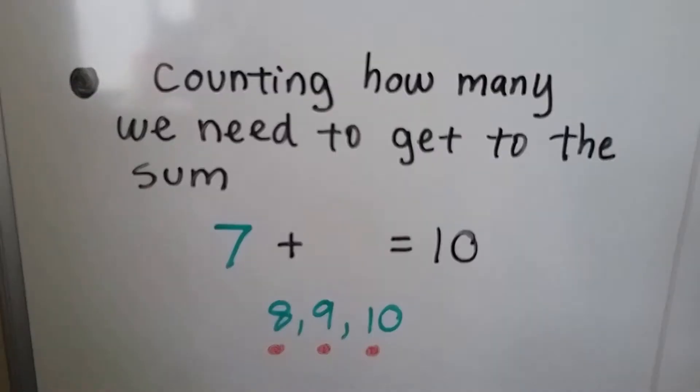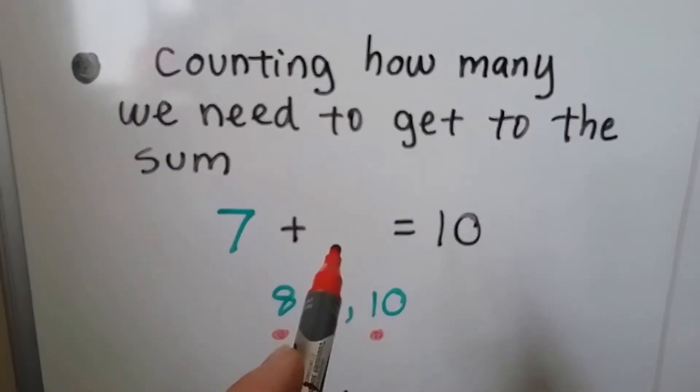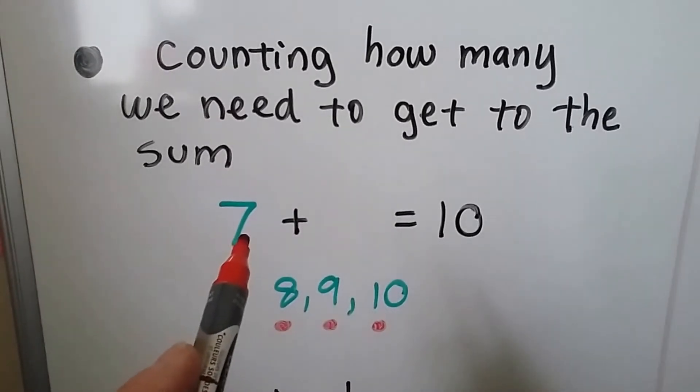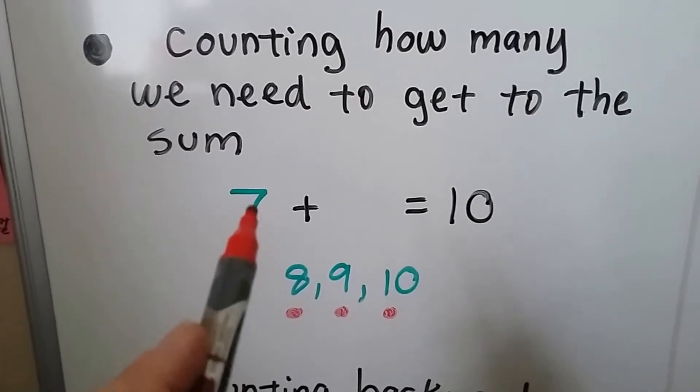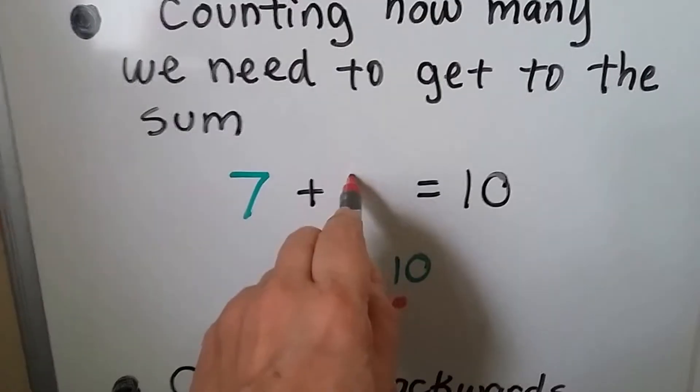And we can try counting how many we need to get to the sum. If we have 7 plus some number equals 10, we start at 7 and go up to the 10. So we start at 7, 8, 9, 10. We needed 3 to get to the 10.